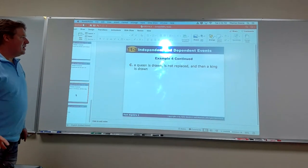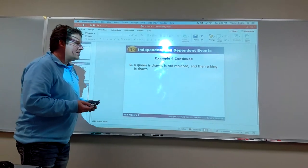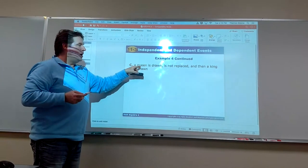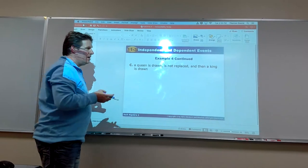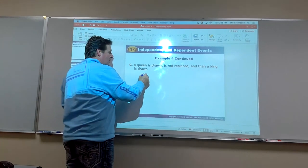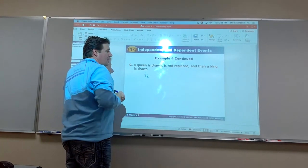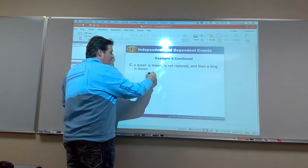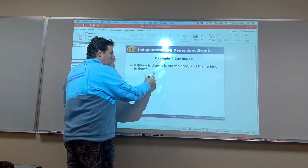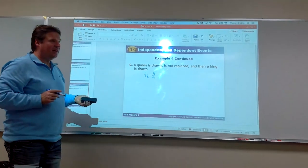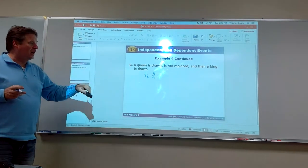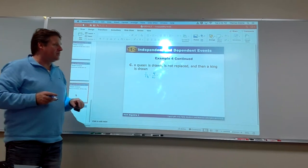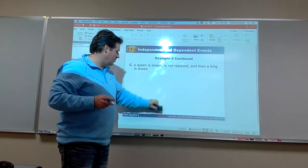Alright. How about this? A queen is drawn, not replaced, and then a king is drawn. Well now a queen. Remember, there's four queens out of the 52. So that's a 1 out of 13 chance if I reduce that. Alright. Now there's four kings that could be drawn. And since I didn't replace it, that means there's 51 cards left. We'd have to multiply those two together and figure out the probability there, 4 out of whatever 13 times 51 is. Okay. And that's our probability of what we get there.